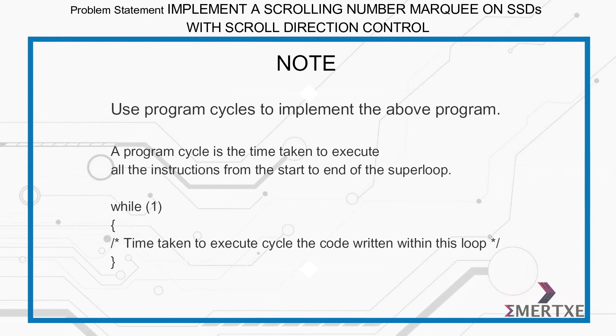A program cycle is the time taken to execute all the instructions from the start to the end of the super loop.